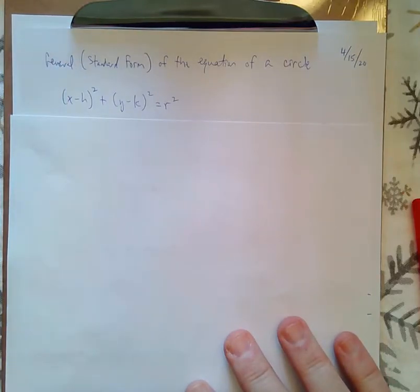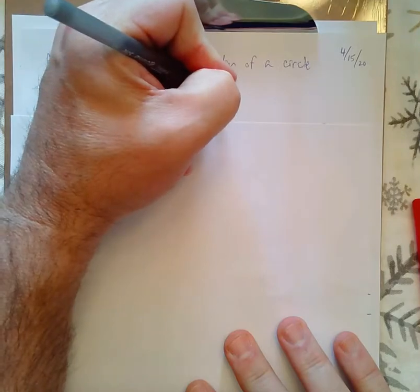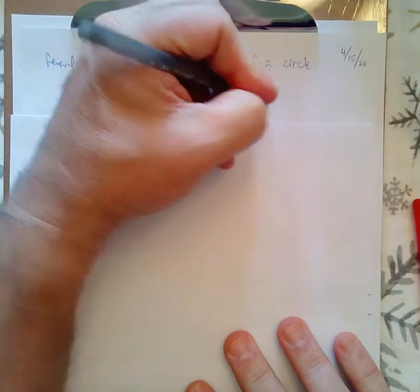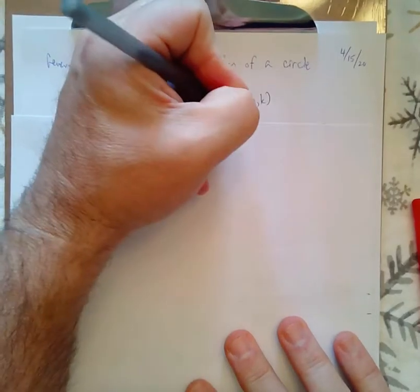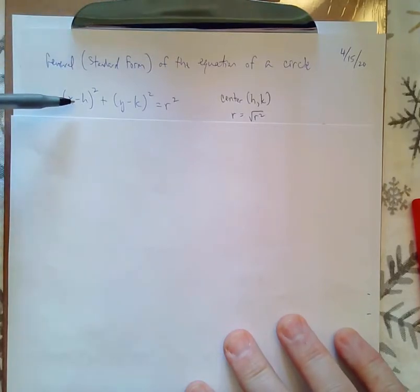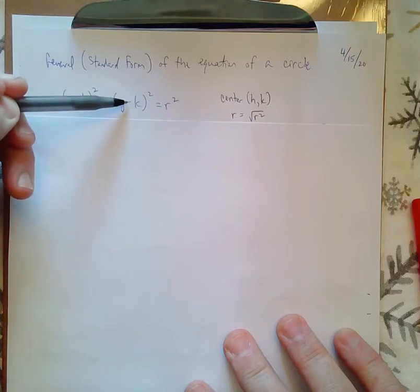So, this would imply that your center is going to be (h, k). And, your radius is going to be the square root of the r squared. If my coordinate is positive, it's going to be a minus sign. And, if my coordinate is negative, it's going to be a plus sign.